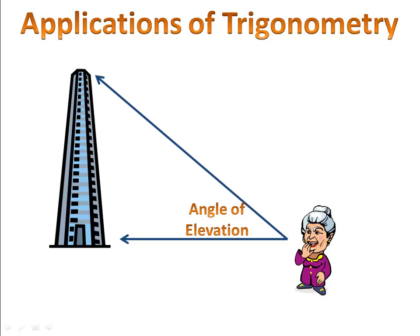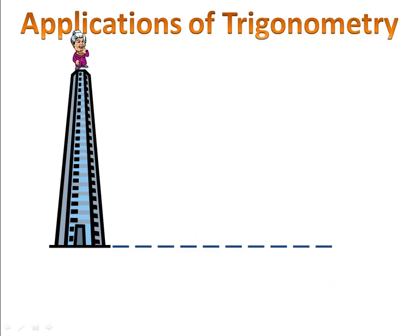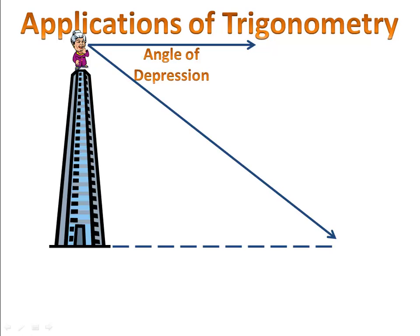She takes the elevator to the top and now she's standing up on the top of the building. She's looking straight ahead into the horizon. She decides to look down to the ground. The angle that's formed when she looks down is called the angle of depression. You can remember that because if you have depression, you'll feel down.